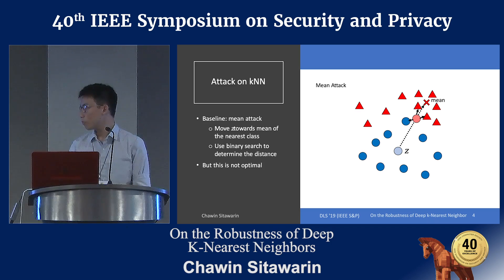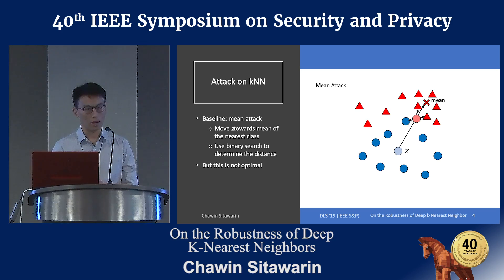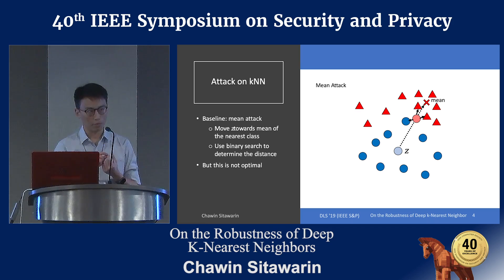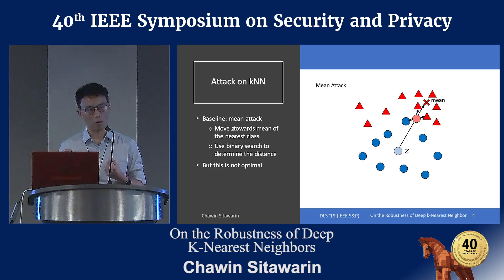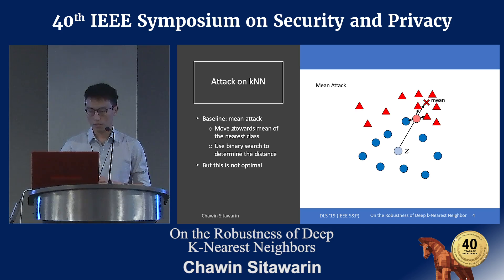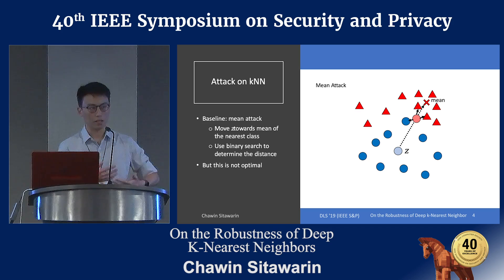Now let's talk about the attack on K-Nearest Neighbor. We have a really simple baseline, which is the mean attack. It is simply just find the mean of training samples of different classes, and we're just going to move our input towards the mean. Then we can use binary search to determine when we want to stop — basically we want to stop as soon as the sample misclassifies. This attack obviously works, but it is not optimal because there might be different directions that we can move to that are much closer.